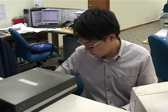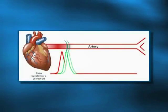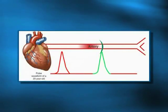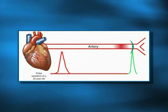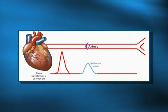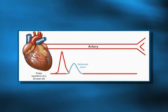The speed at which the reflected wave comes back is very important. If we look at a person who is about 25 years old, when he generates a pulse wave from the heart, the wave will travel down, hit the bifurcation, and come back during the diastolic phase.